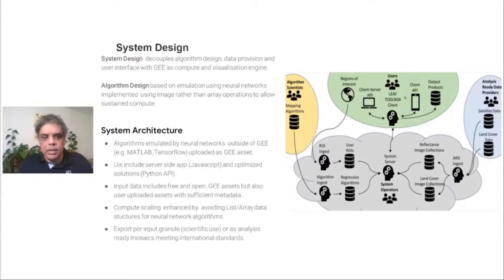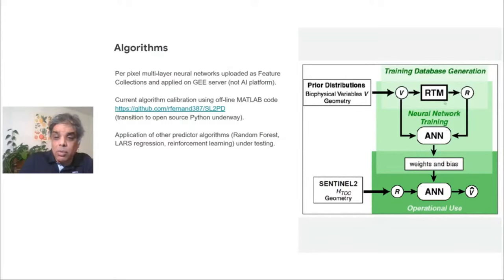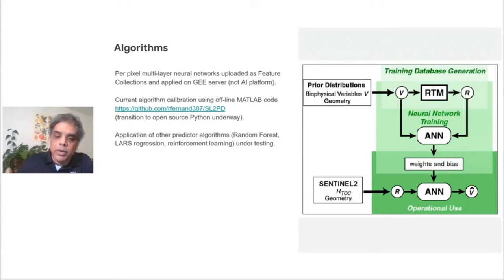As an example, this is an algorithm developed with the French for Sentinel-2. In MATLAB, we train neural networks — prediction regression algorithms — using ray tracing computer graphics models that simulate what a satellite would see under different vegetation conditions, with hundreds of thousands of conditions. We upload the trained networks, which are essentially coefficients and a feature collection in Earth Engine terminology, into Earth Engine and apply them. We've developed our own processing algorithms on the server to apply neural networks rather than the Google AI platform — though we do train on it — because it's faster and free and open. You don't have to pay for it.